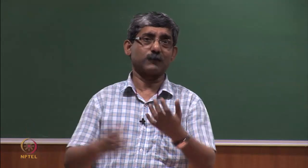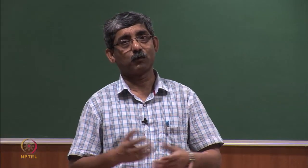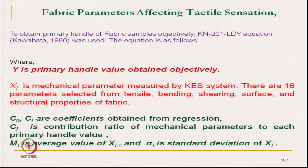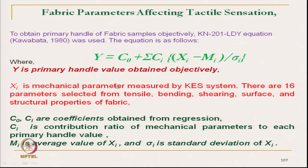Now, what do we do with these parameters? The Kawabata system provides one mechanism to get the overall fabric handle value using all these parameters. This is the equation: Y is the parameter which relates to handle aspects or tactile sensations. C0 is the coefficient of the equation, and Ci is the contribution ratio of a particular parameter Xi, where Xi denotes the different parameters like tensile related parameters and shear related parameters.